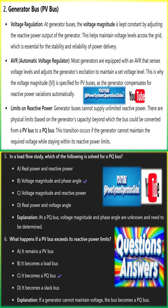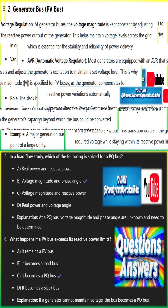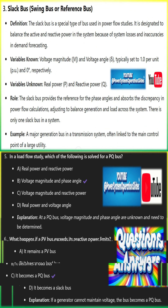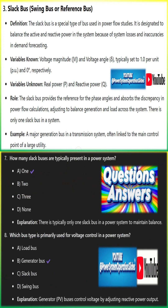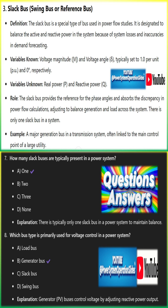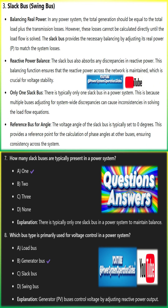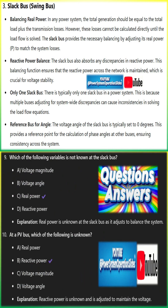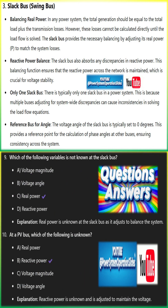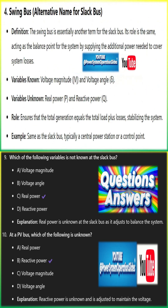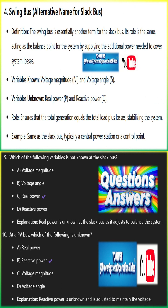Example: a distribution substation where loads like industries, commercial buildings, or residential areas are connected. In real-world power systems, a significant portion of the buses are load buses, representing points where power is consumed by different customers. These loads can vary throughout the day, especially in residential areas due to lighting, air conditioning, or appliances. Industrial loads can also have complex power requirements, including heavy machinery or induction motors.